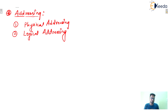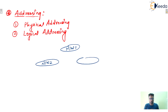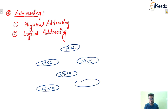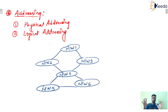Let's say there are different networks — network 1, network 2, network 3, network 4, network 5, and network 6. These are different networks and they are connected. These are the networks in the world.